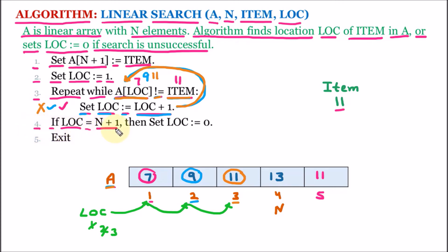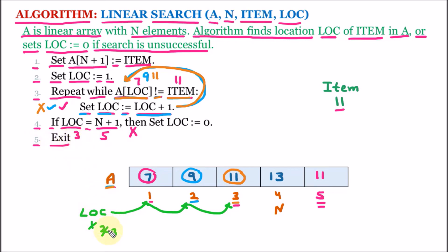In line number 4, we check: if LOC is equal to N+1. We know that N+1 is 5, which is the terminating condition. If we were searching for an item not in the array, the location would keep incrementing until N+1. But right now, location is 3, and 3 is not equal to 5, so the then part will not work. The algorithm exits, and we can see that the value of LOC is 3 — meaning we have found element 11 at position 3.